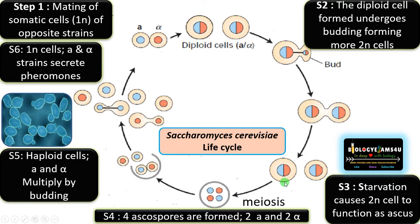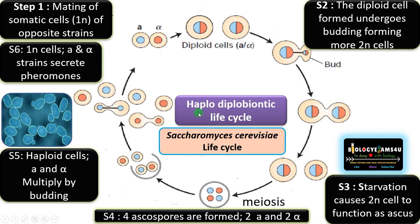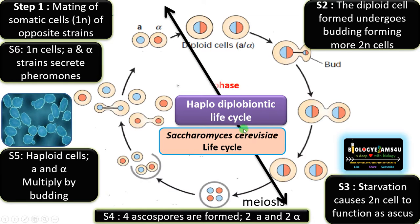So in this life cycle, yeast can exist in two life forms — either as diploid yeast or as haploid yeast. That is why the life cycle is called the haplodiplobiontic life cycle. Haplo means the haploid phase, diplo means the diploid phase, and both phases are equally dominant.